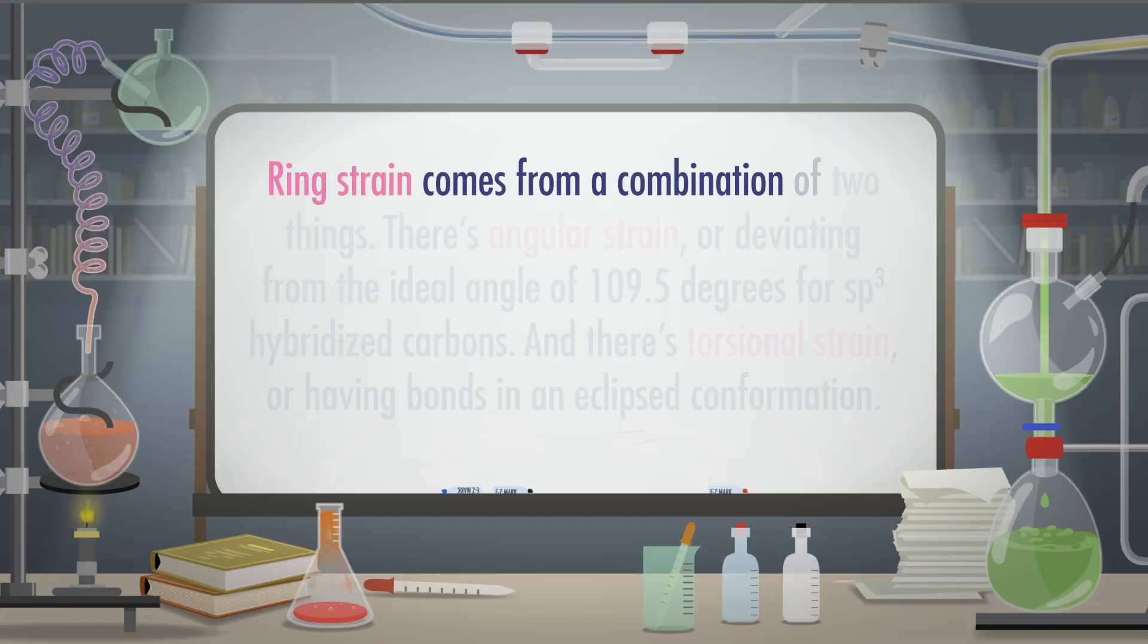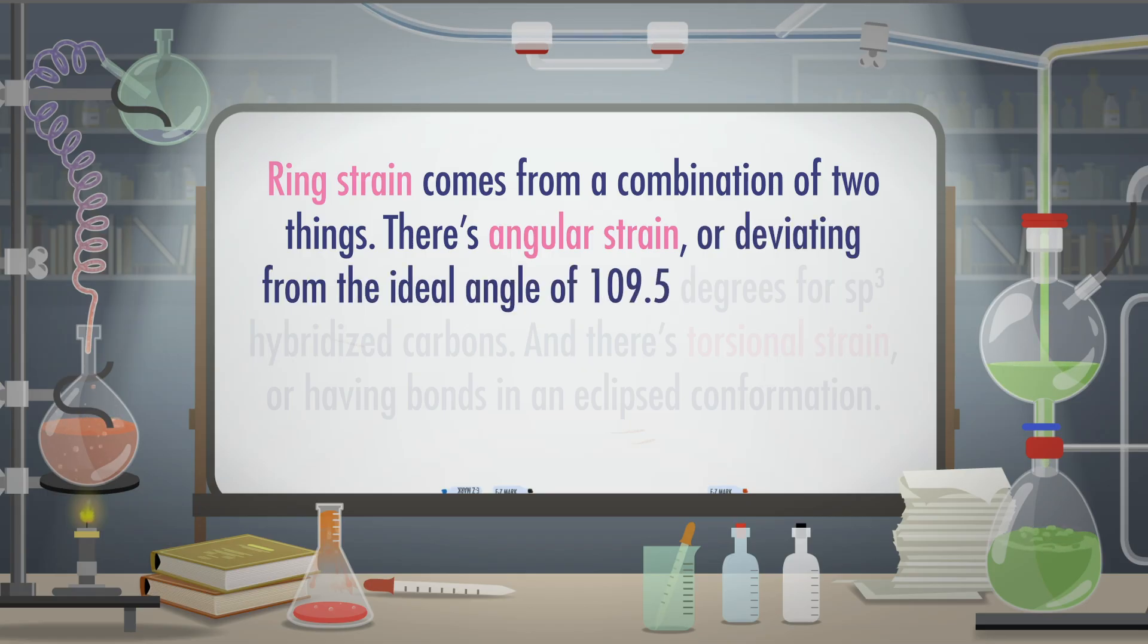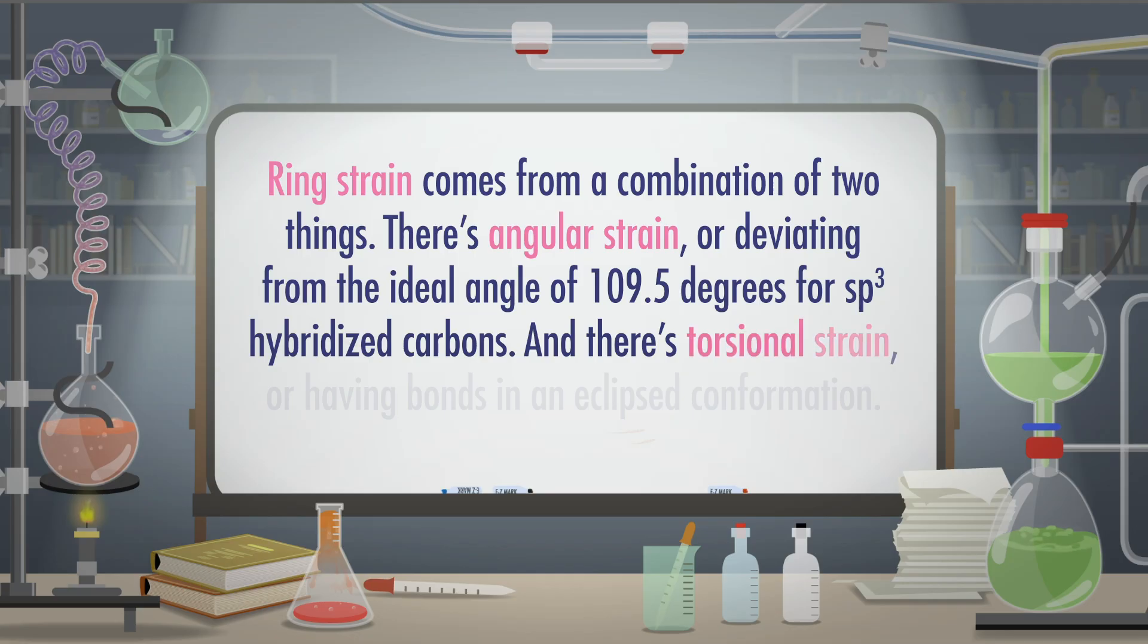The most common cycloalkanes are cyclopentanes and cyclohexanes, because of what we talked about last episode. They have low ring strain, so they're more stable. Ring strain comes from a combination of two things. There's angular strain, or deviating from the ideal angle of 109.5 degrees for sp3-hybridized carbons. And there's torsional strain, or having bonds in an eclipsed conformation.